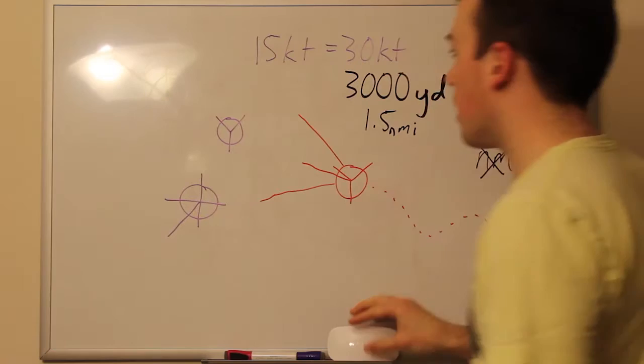Another shorthand for this rule of six is basically just multiply your speed by 200, and then you get yards.